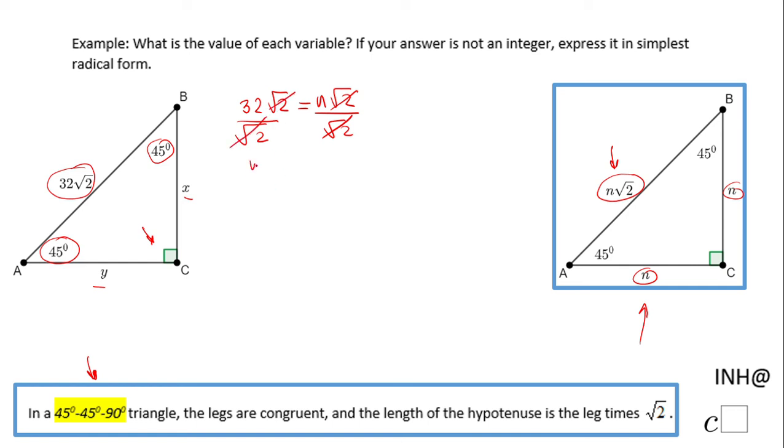So I end up with n equals 32. But let's take a look in the picture, what is n in this picture? If you notice, n are the legs. X will be 32 and Y will be also 32.